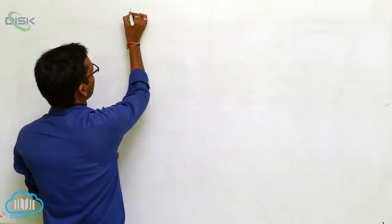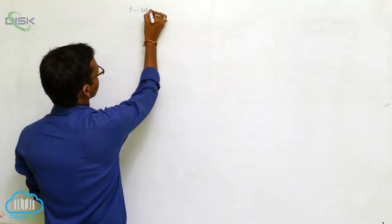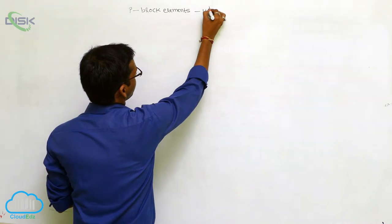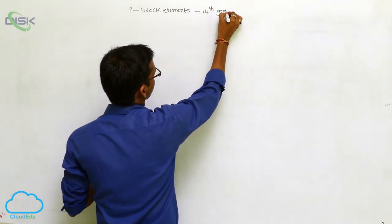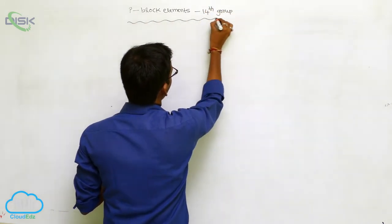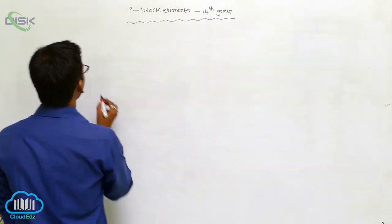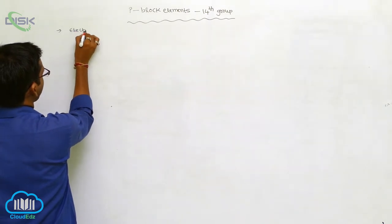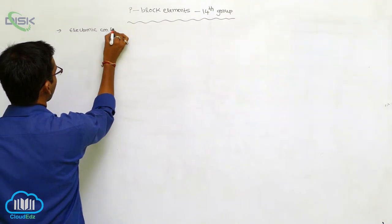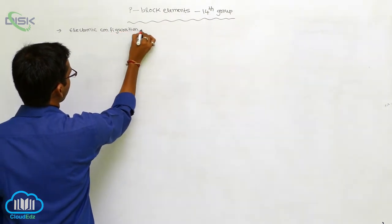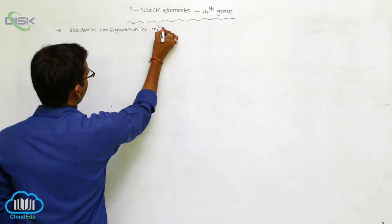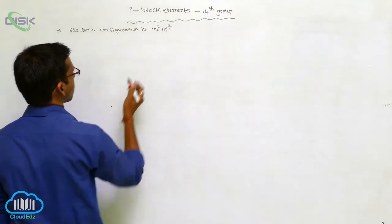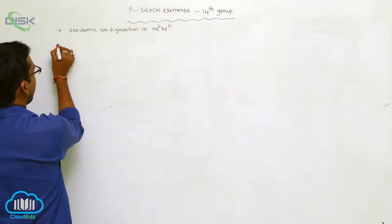Next lesson: P-block elements, 14th group. The general electronic configuration of the 14th group is NS2 NP2, so the outermost shell contains only 4 electrons.